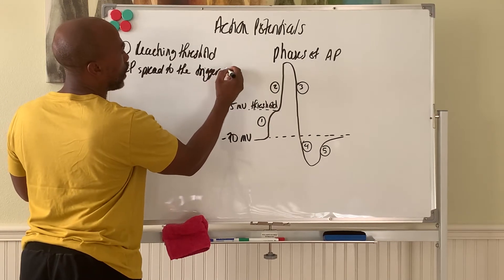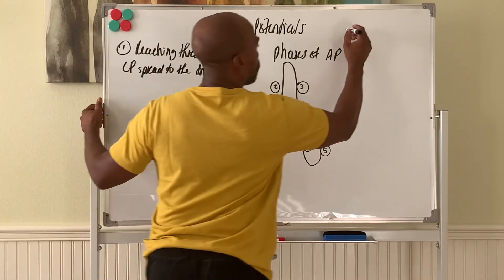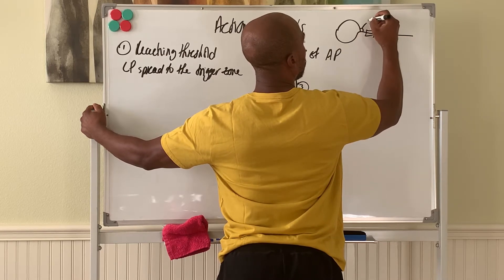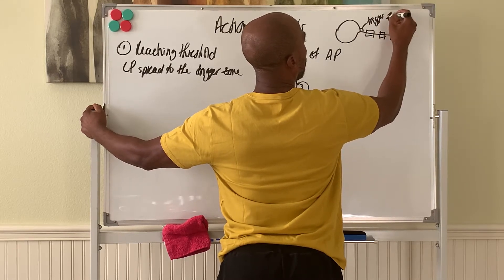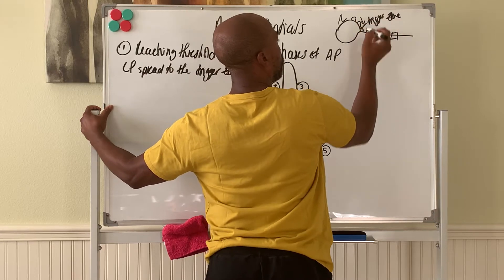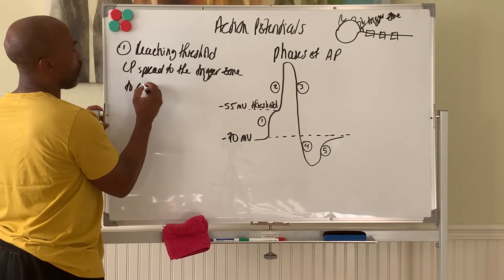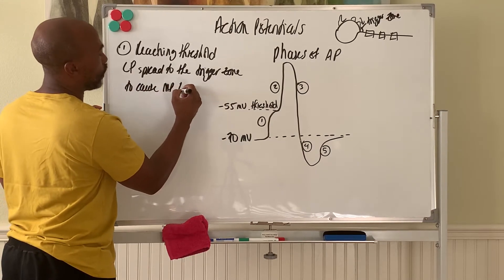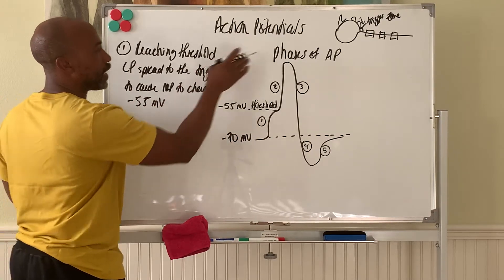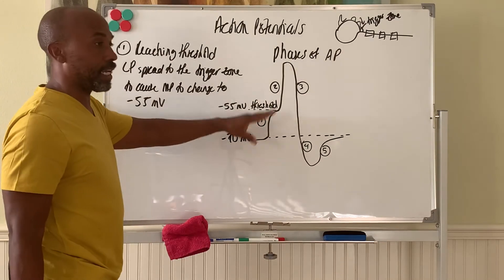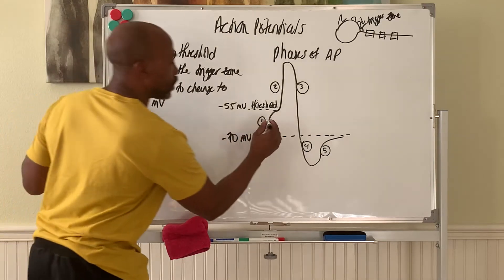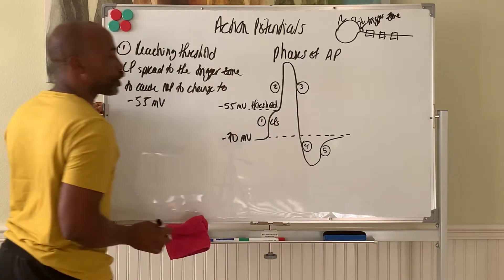The trigger zone is located at the start of the axon, before the myelinated region. Local potentials spread to the trigger zone, trying to reach it. When they spread there and cause the membrane potential to change to negative 55 millivolts, the ions entering the cell will slowly drift the membrane potential up to threshold. So the job of local potentials is bringing the membrane potential up to threshold.